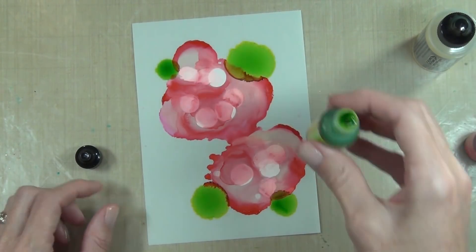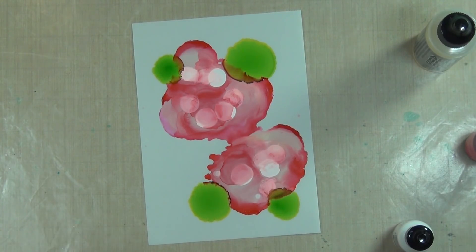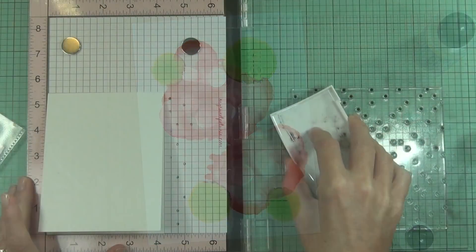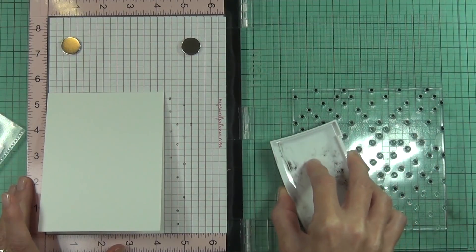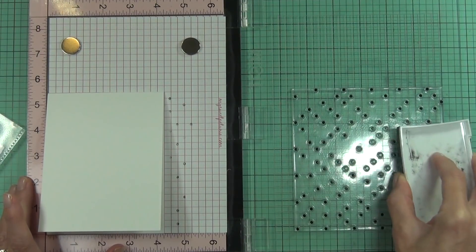So I've set that aside to dry. I'm not sure if it takes longer on the translucent. The normal white Yupo paper doesn't take too long.